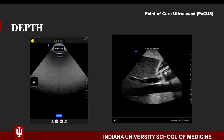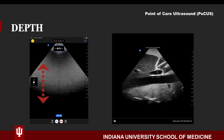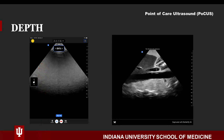Depth allows us to see structures at various depths within the body. The depth of penetration is related to the frequency of the ultrasound wave. Higher frequencies have a shorter depth of penetration and lower frequencies have deeper penetration ability. Degree of penetration is probe dependent, so there is a limit to the probe's ability to see structures within the body. Depth is easily modified by sliding your finger up or down the screen. Sliding toward the top of the tablet will increase depth, while sliding toward the bottom will decrease the depth and reduce penetration of the sound waves.